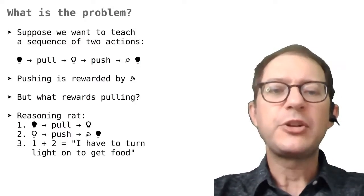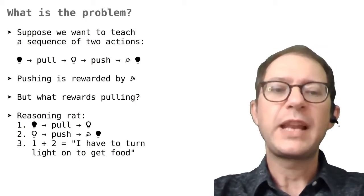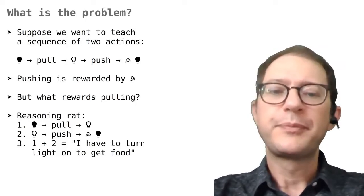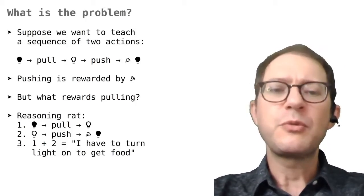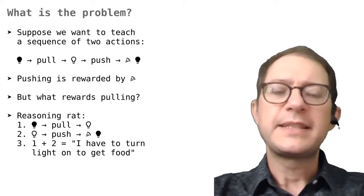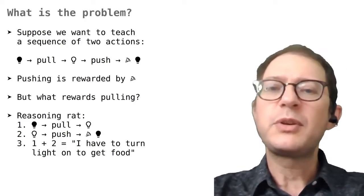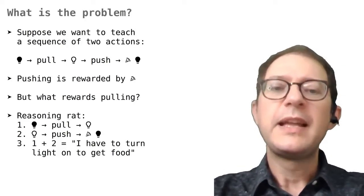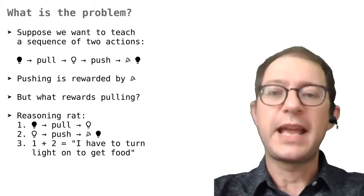But how can the rat learn to pull the chain to turn the light on? This is an action that is not rewarded, as seeing the light on is not a reward to the rat. How can the rat learn this first action?